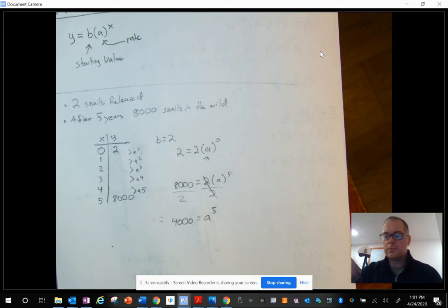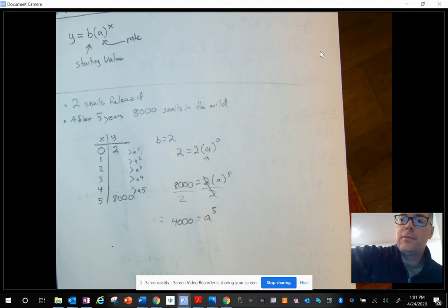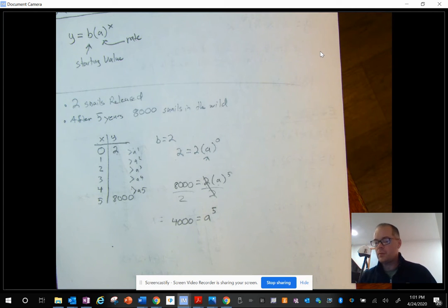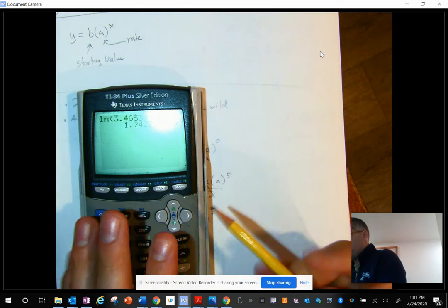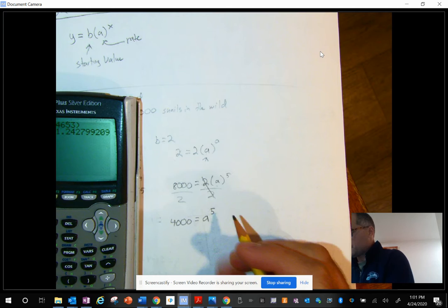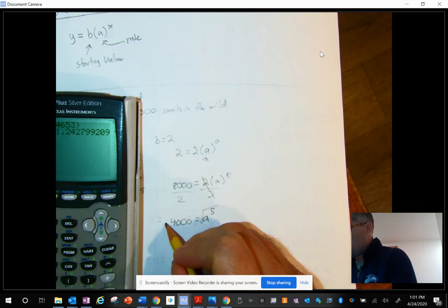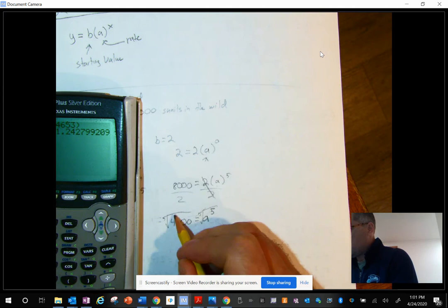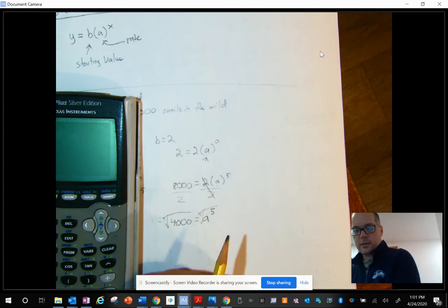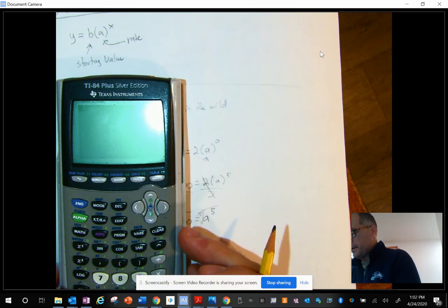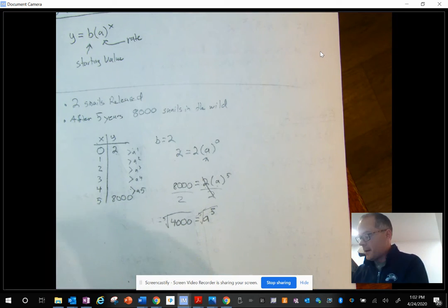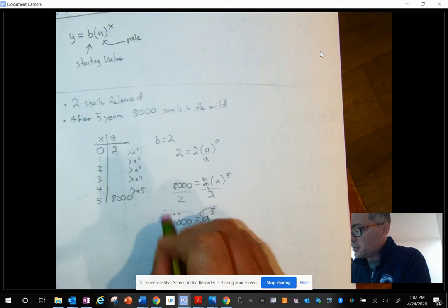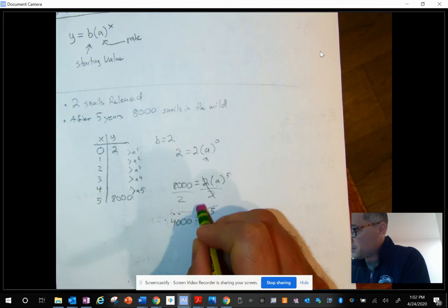Now, if you guys know how to use your graphing calculators, if you have them, you can actually just push the math button and take the fifth root of each one of these. So to get rid of this to the fifth power, you could actually just take the fifth root of both of these, and that would cancel this out. And then you'd find out what that equals. You could just plug it into your calculator. It would be super easy. But I don't want to show you that because this is an exponential unit. So we're actually going to use rules of exponents to do this.